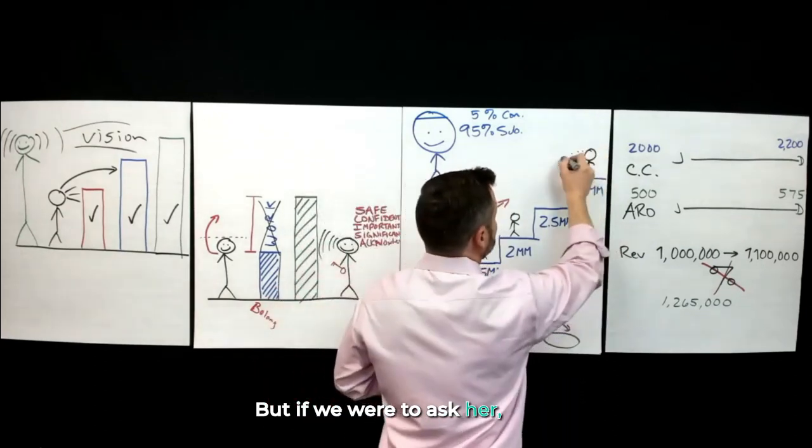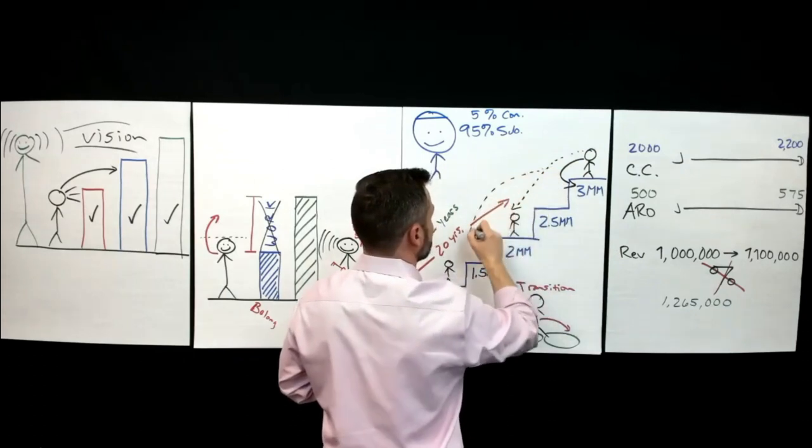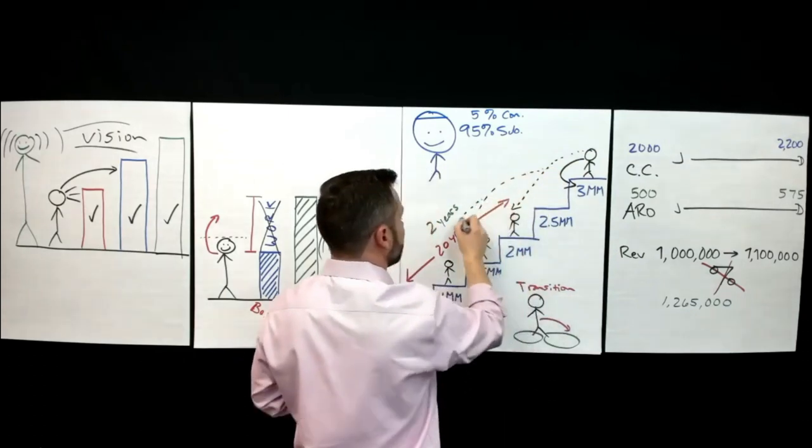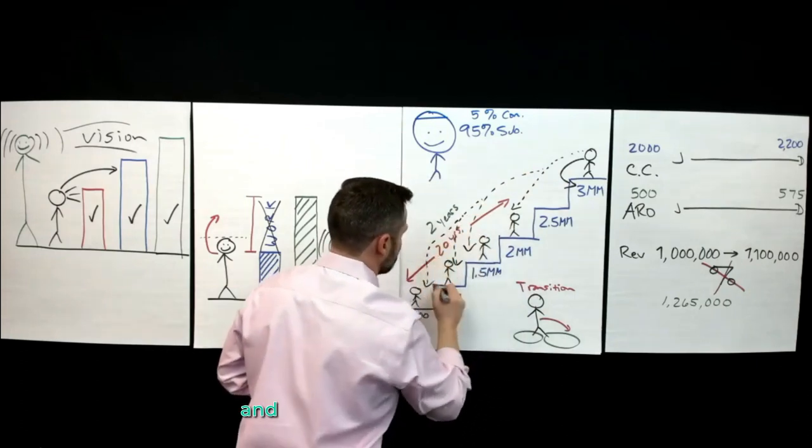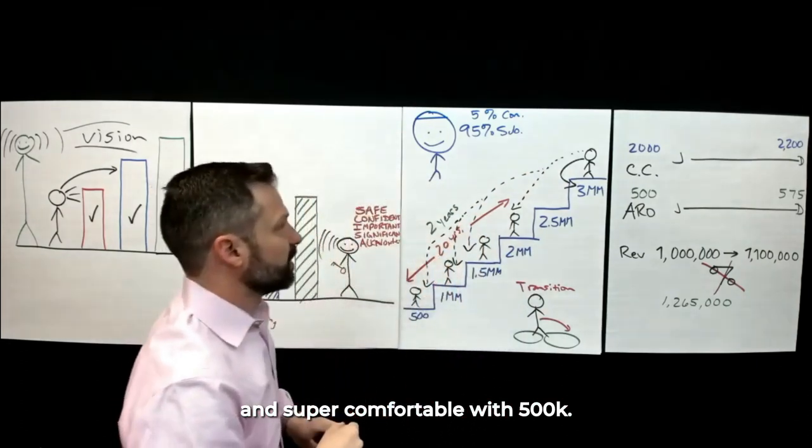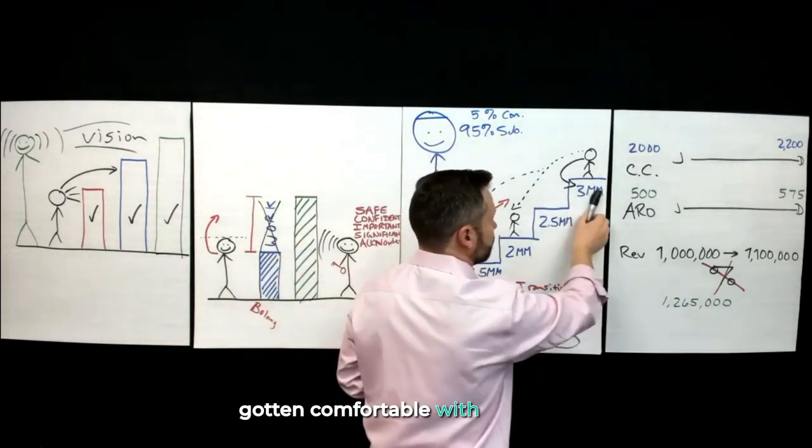But if we were to ask her, she's super comfortable with $2 million. She's super comfortable with $1.5 million. Super comfortable with $1 million. And super comfortable with $500K. Her brain hasn't caught up and gotten comfortable with $2.5 million and has not gotten comfortable with $3 million.